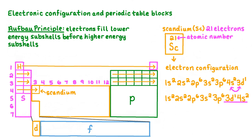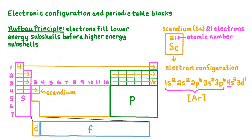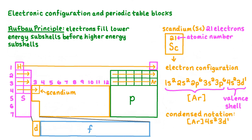You'll often see the electron configurations of transition metals written so that the 3d subshell comes before the 4s subshell — it is acceptable to write it either way. The electron configurations for elements beyond period 4 can be quite long, so chemists simplify the electron configuration by using condensed notation. Scandium is in period 4, and the part of the electron configuration written before reaching period 4 corresponds to the electron configuration of argon. Condensed notation consists of a noble gas in brackets followed by the electronic configuration for the valence electrons, so the condensed notation of scandium is [Ar] 4s2 3d1.